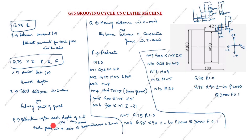Note: P is the depth of cut in the X axis — not retract after each pass. That correction has been noted. P means depth of cutting in X axis, or each pass in X axis. Thanks for watching this video.